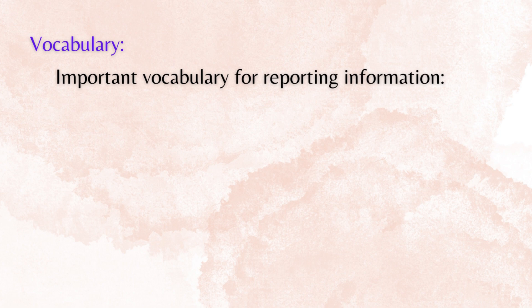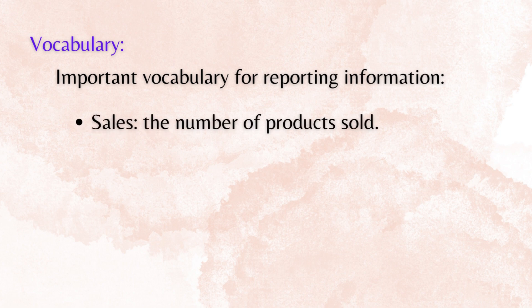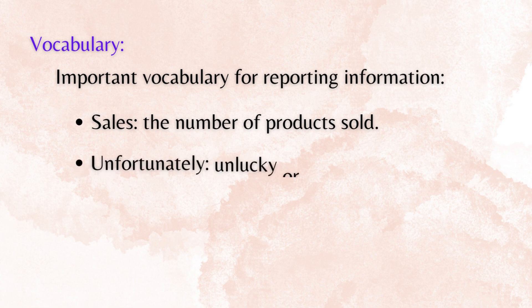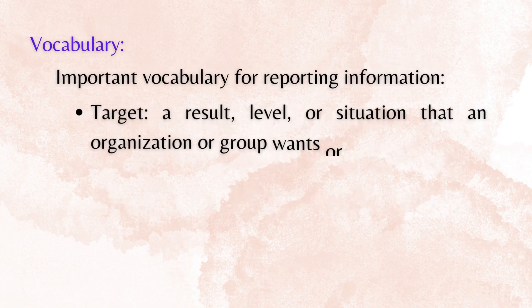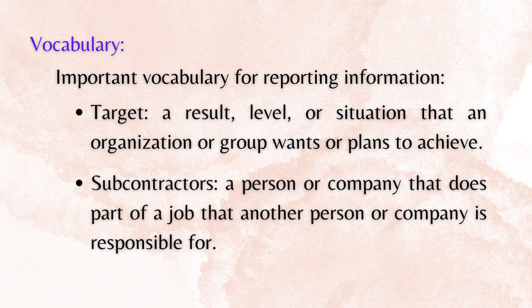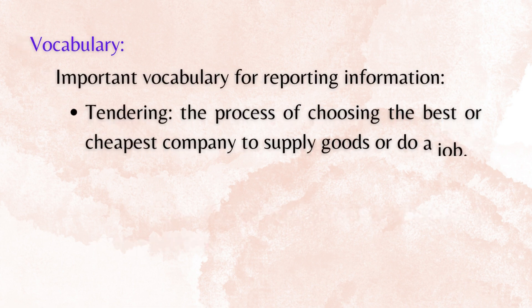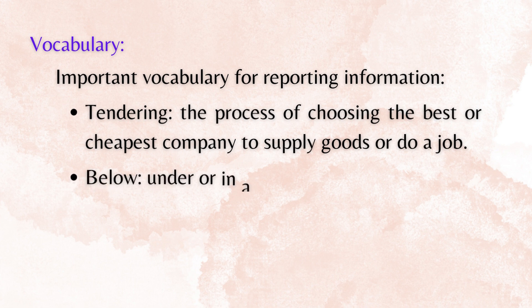Important vocabulary for reporting information: Sales — the number of products sold. Unfortunately — unlucky or having bad effects. Scheme — an officially organized plan or system. Target — a result, level, or situation that an organization or group wants. Subcontractors — a person or company that does part of a job that another person or company is responsible for. Tendering — the process of choosing the best or cheapest company to supply goods or do a job. Below — under or in a lower position.